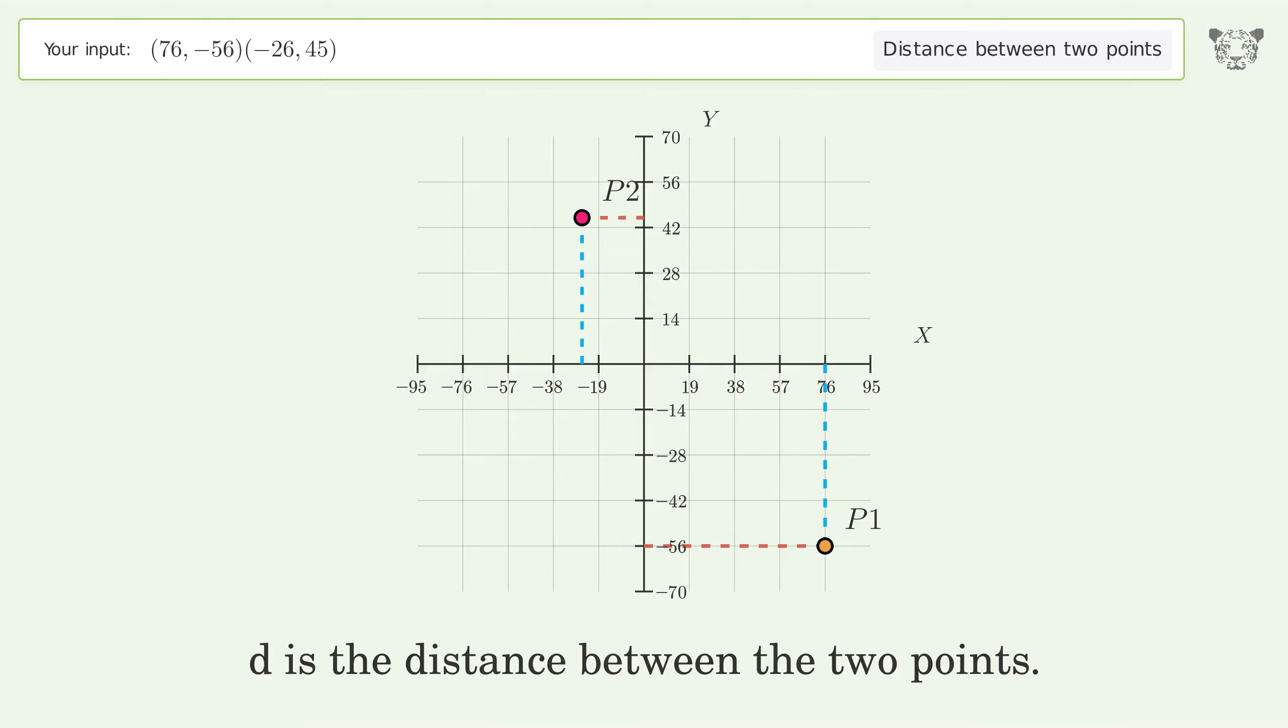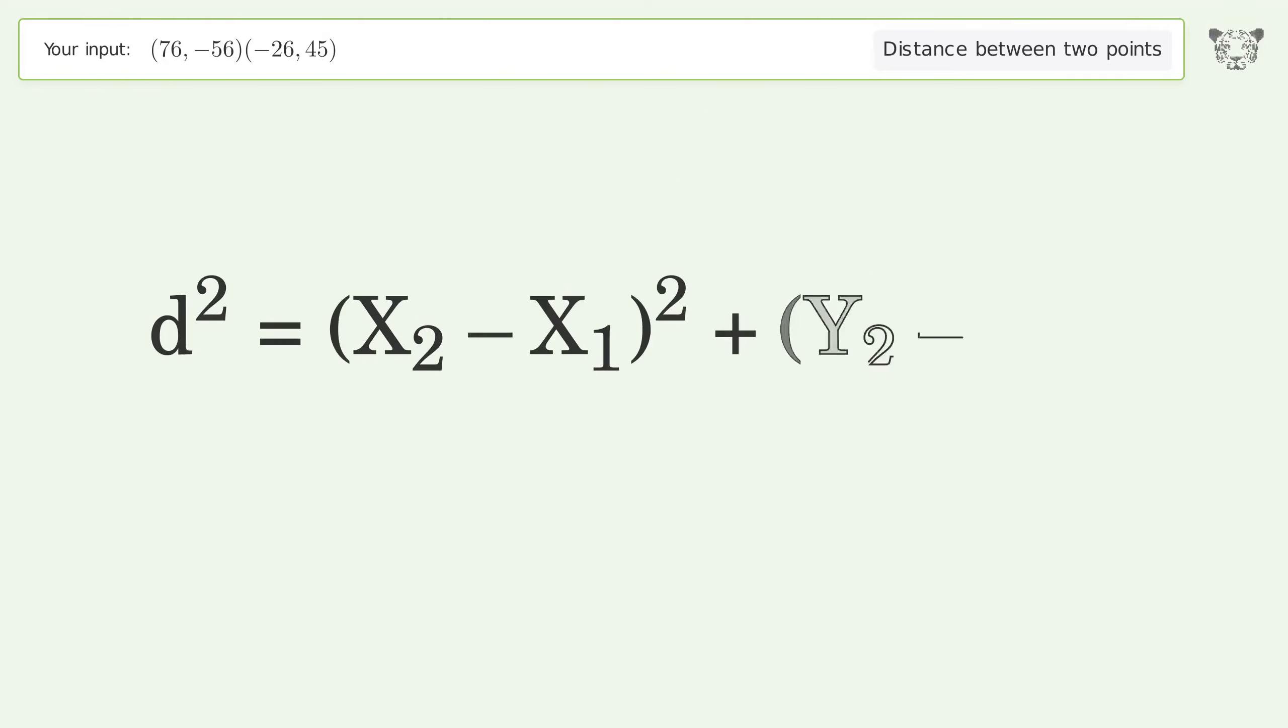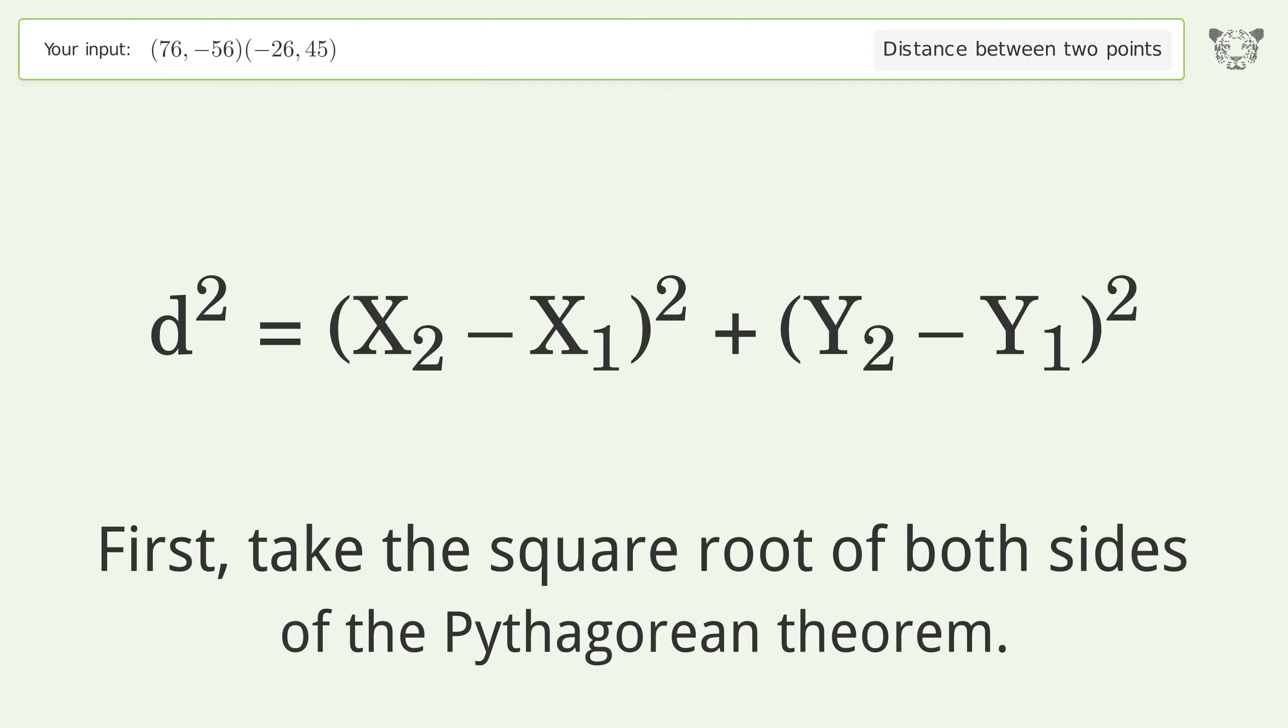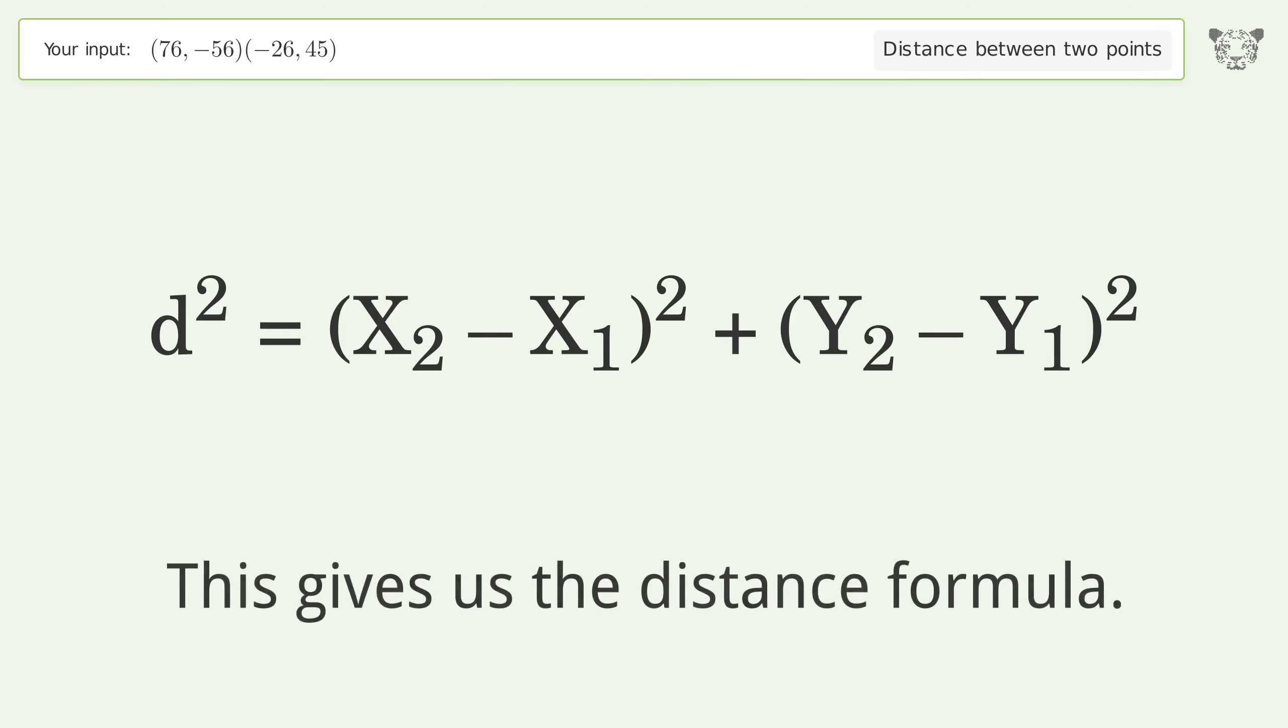d is the distance between the two points. First, take the square root of both sides of the Pythagorean theorem. This gives us the distance formula.